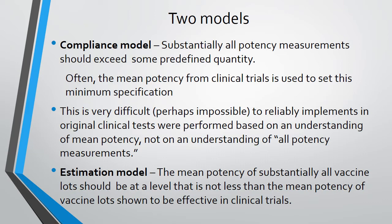It is a minimum specification based on mean potency of the vaccine. This is very difficult, perhaps impossible, to reliably implement the original clinical test. So these tests were performed based on an understanding of mean potency, not on an understanding of all potency measurements. These are shown to be effective in clinical trials.